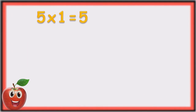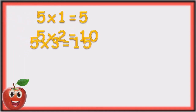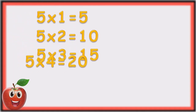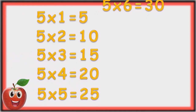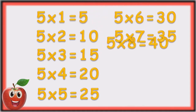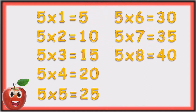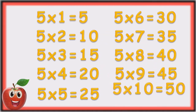Five ones are five. Five twos are ten. Five threes are fifteen. Five fours are twenty. Five fives are twenty-five. Five sixes are thirty. Five sevens are thirty-five. Five eights are forty. Five nines are forty-five. Five tens are fifty.